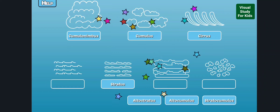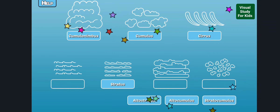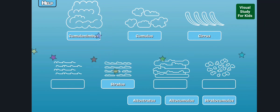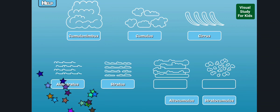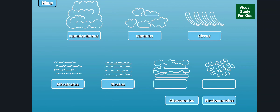Cumulus clouds are low to mid-level clouds. They're big, white, puffy, and usually mean good weather. Altostratus clouds are medium-level clouds that form a dark gray covering and are a sign of rain.